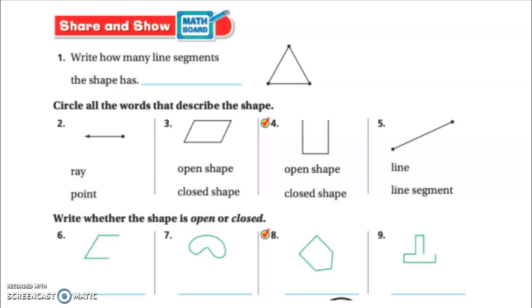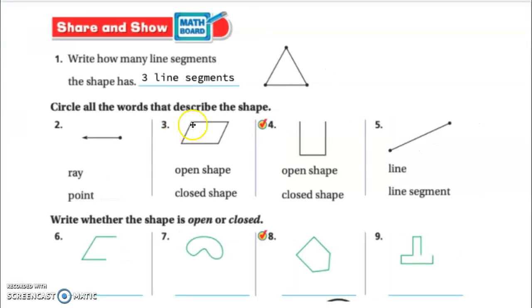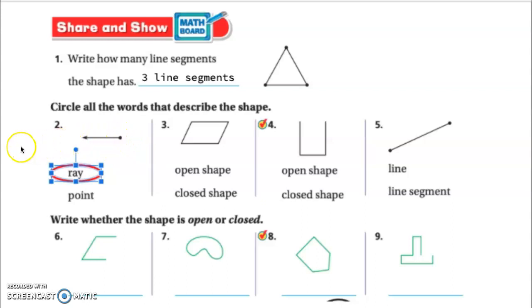Now we're going to look at some other examples and practice the vocabulary together. Number one says to write how many line segments the shape has. Remember, line segments means sides, so we count the sides together: one, two, three. This triangle has three line segments. For number two, we have to describe what we have using our vocabulary — this first one has to be a ray, because a ray has one endpoint and then goes on forever in the other direction, just like the ray of a sun.